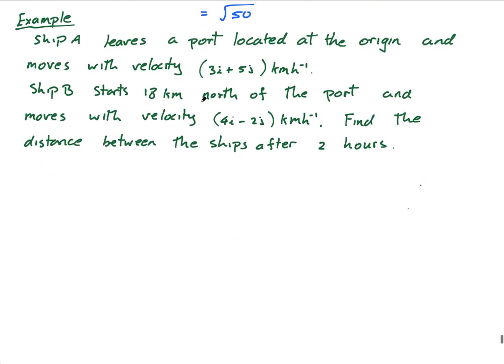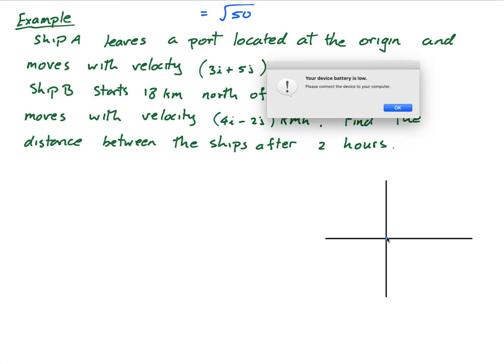This example here, I'm actually going to look at boats, which is more in two dimensions. So it says, Ship A leaves a port located at the origin and moves with a velocity (3i + 5j). Whenever I have a question, I like to draw a diagram just to see what's actually happening. So imagine I have my set of axes, and this ship is leaving the port and he's moving with a velocity of 3i plus 5j. So let's say that's 3i plus 5j, something like this. He's moving like this.